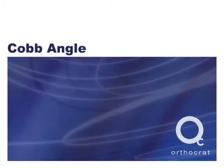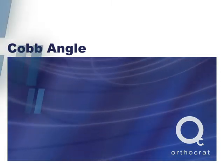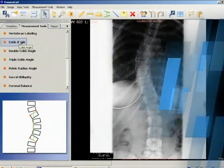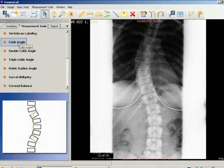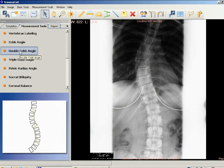Cobb angle. The Cobb angle measurement is used for evaluation of curves in scoliosis on an AP radiographic projection of the spine.